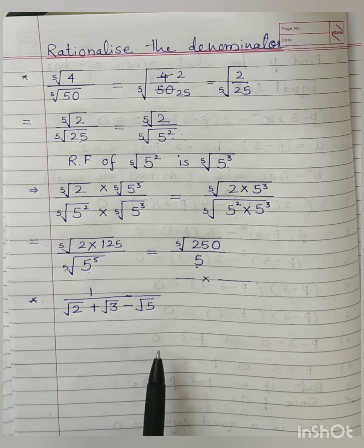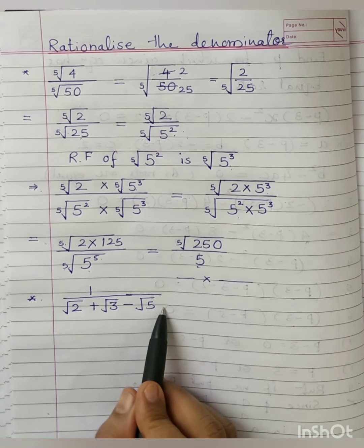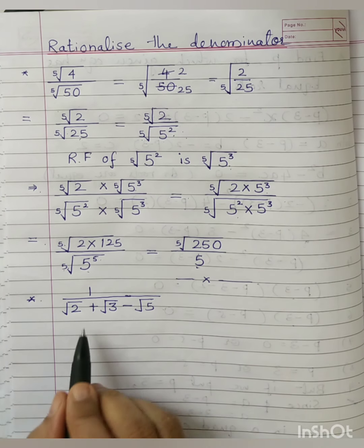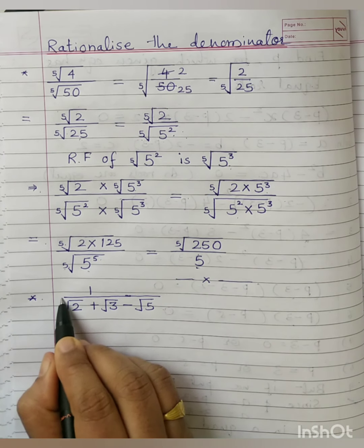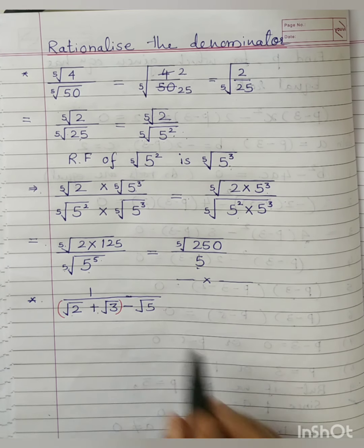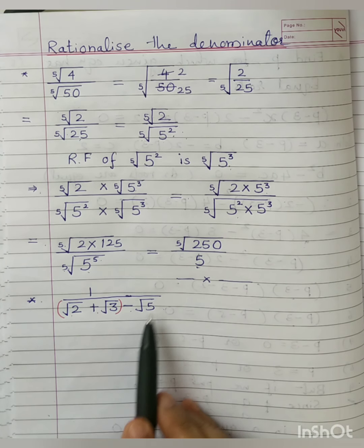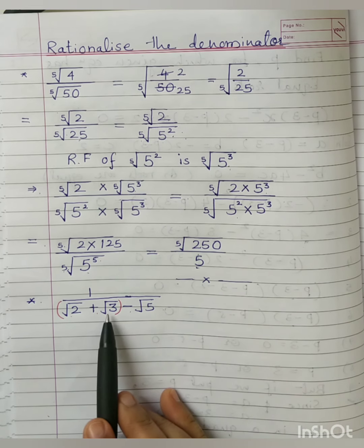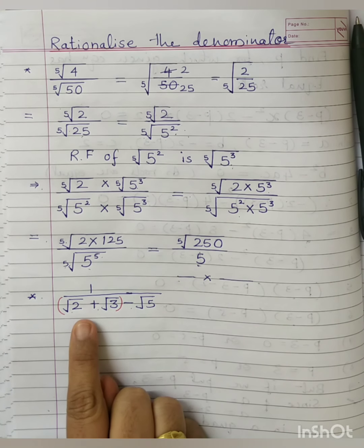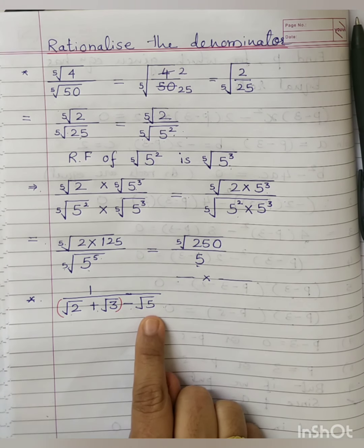You will wonder how to find the conjugate, since we know conjugate only for binomials. What we are required to do here is convert this trinomial and treat it as a binomial. For that, we consider two terms together as one term. I am going to club root 2 plus root 3 as one term, and minus root 5 as my second term. There are other options too — you could take root 2 as one term and root 3 minus root 5 as the other. The first term of this binomial is root 2 plus root 3, and the second term is root 5.